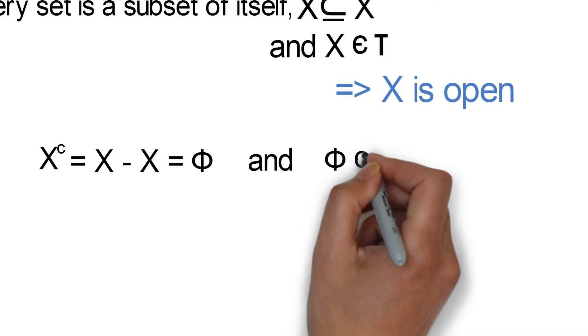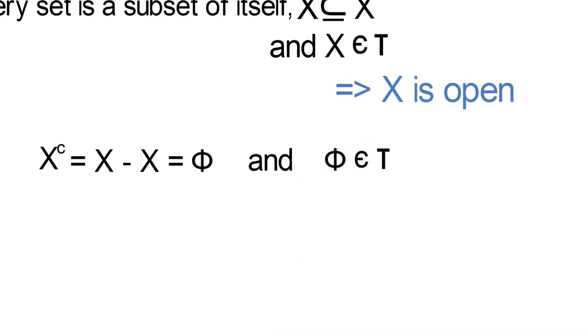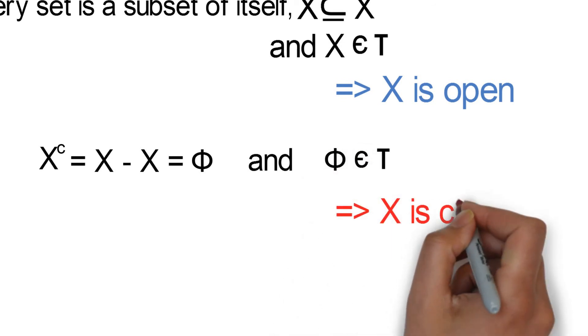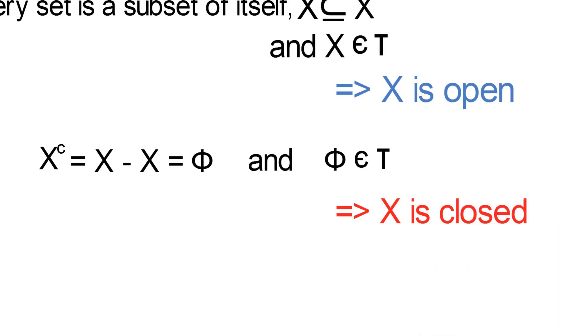And the empty set is a member of τ. So this also shows that X is closed. Now this means that the set X is a clopen set. So we've gotten a good example of a clopen set.